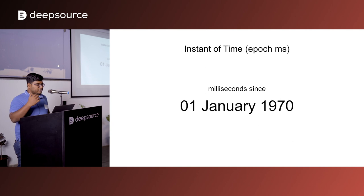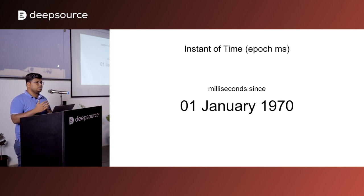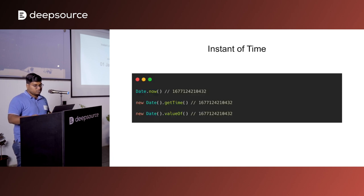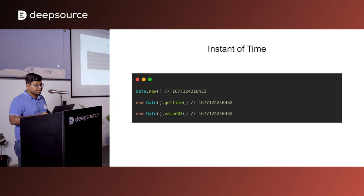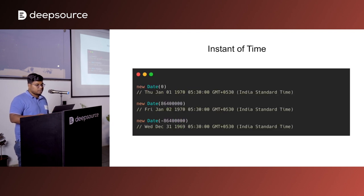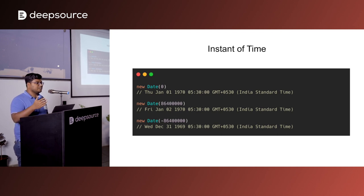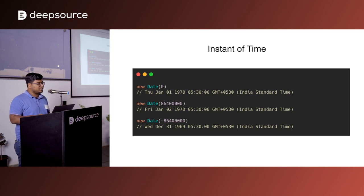The JavaScript Date API, very much like Java, represents an instance in time. For calculating an instance in time we need a baseline, and here the baseline is the epoch time — 1st January 1970. Internally, whatever method you use in the JavaScript Date API currently represents the number of milliseconds that have elapsed since 1st January 1970. You can verify this by using date.now, which prints this number — nothing but the number of milliseconds since the epoch. Older methods like getTime and valueOf do the same thing. The Date constructor has many overloads; one of them is passing an integer value representing the number of milliseconds to add or subtract from the epoch time.